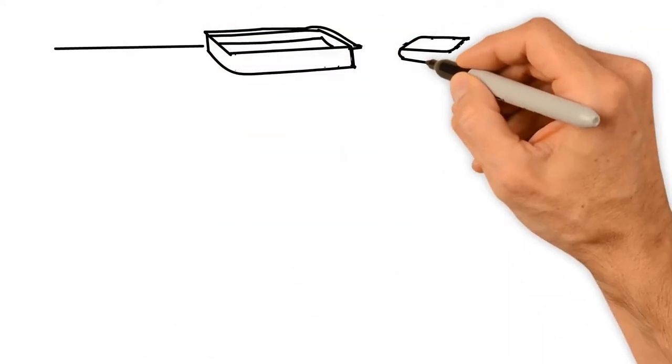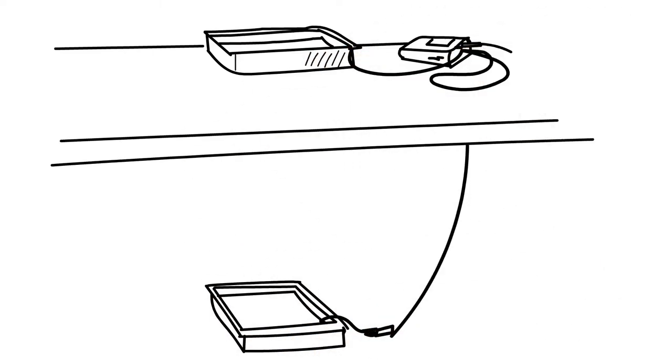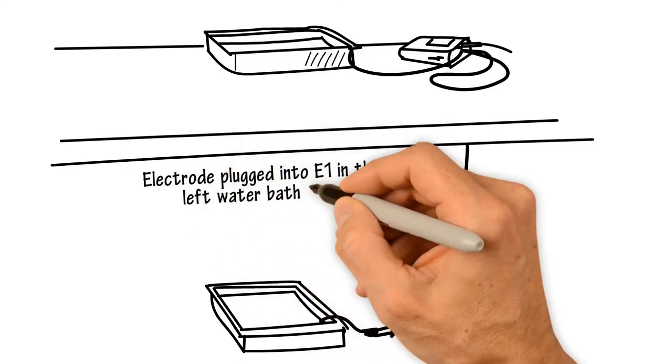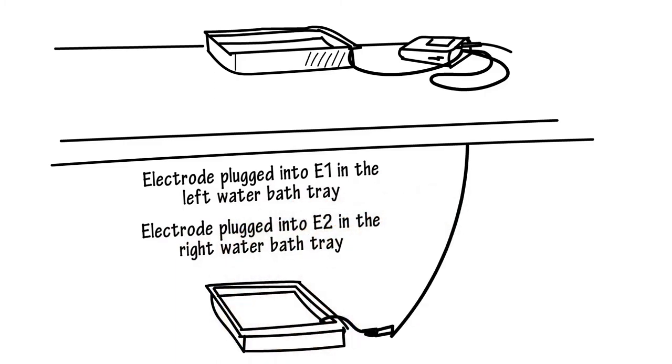Step 5: Place an electrode into each water bath tray. Although it doesn't matter which electrode goes where, for ease of use, place the electrode plugged into E1 in the left water bath tray and the electrode plugged into E2 in the right water bath tray.